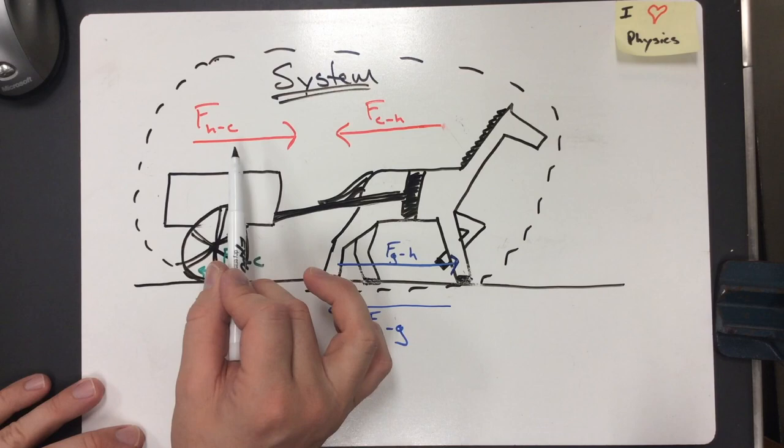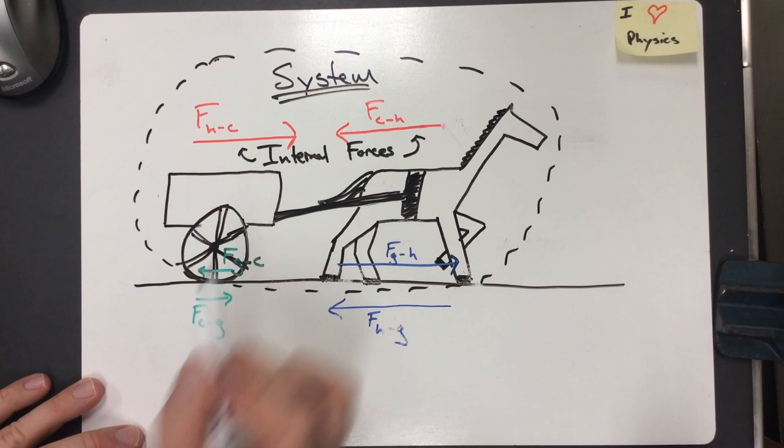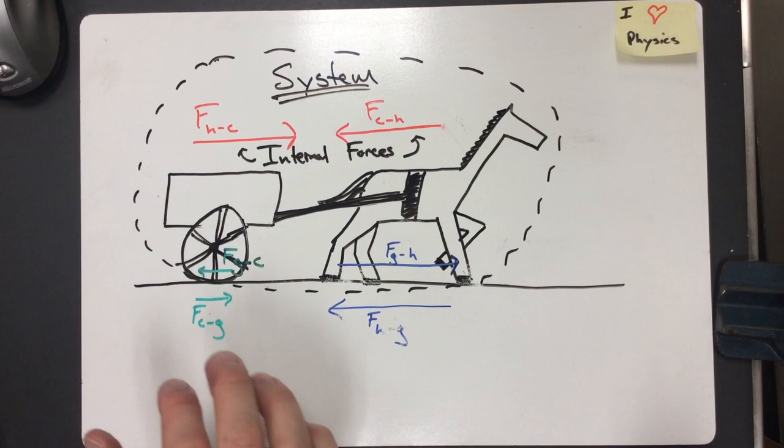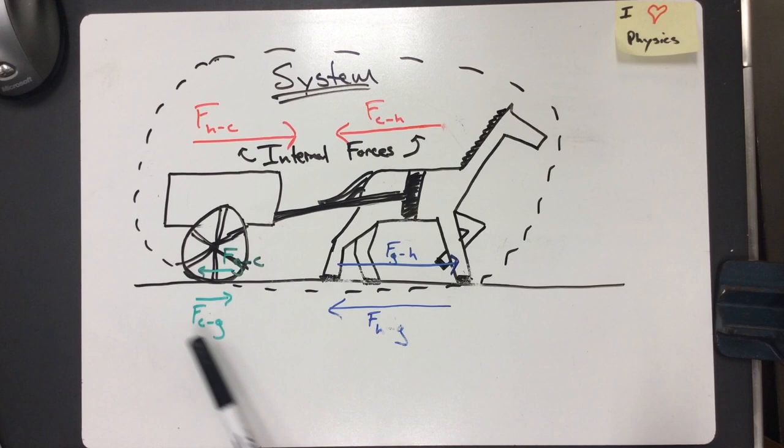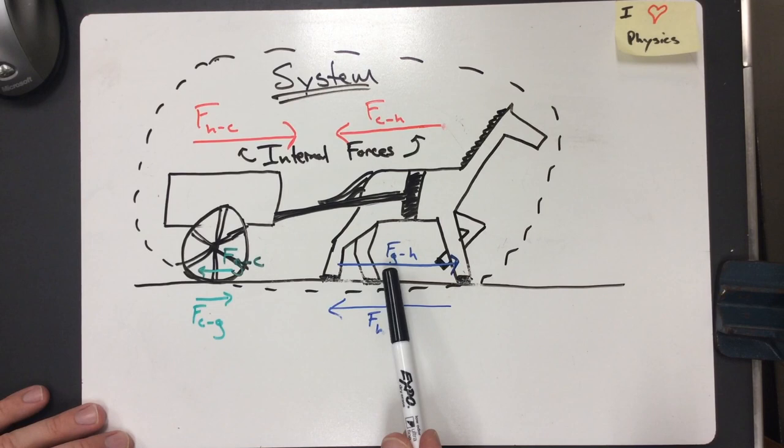And what we can instantly see is that this force of the cart pulling back on the horse and the horse pulling the cart forward, those are inside our system. And so we call those internal forces. Therefore, they're not involved at all with what's going on. When we take a look at Newton's first law, we said an object in motion will stay in motion or object at rest stays at rest unless acted on by an external force. And that's what we got going down here. These forces are coming from the ground, and they're acting on the system.